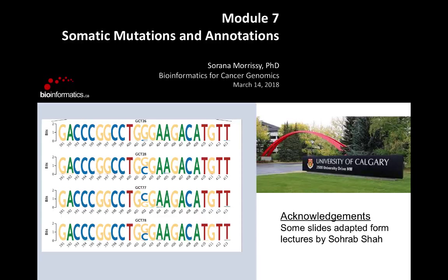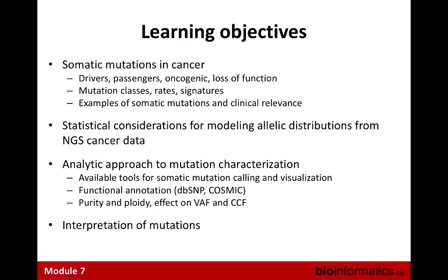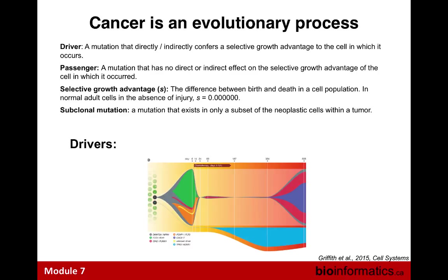Today we're going to talk about somatic mutations in cancer — the idea of drivers versus passengers, oncogenic events, loss of function events, just like we talked about yesterday for copy number variations. We'll also cover mutation classes and rates, signatures, examples of somatic mutations with clinical relevance, and in the second part, statistical considerations for modeling variant allele frequencies from next-gen sequencing data.